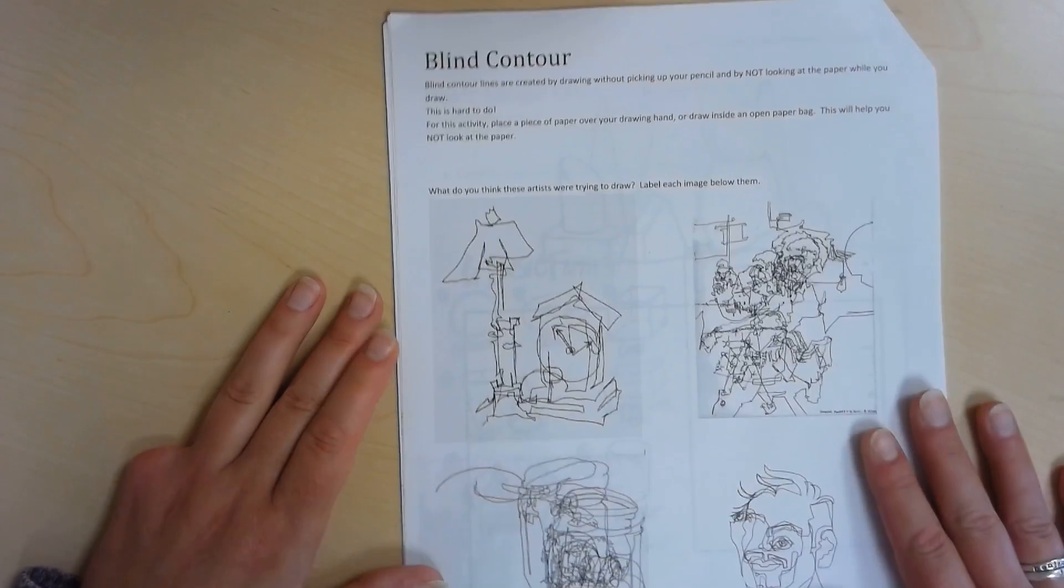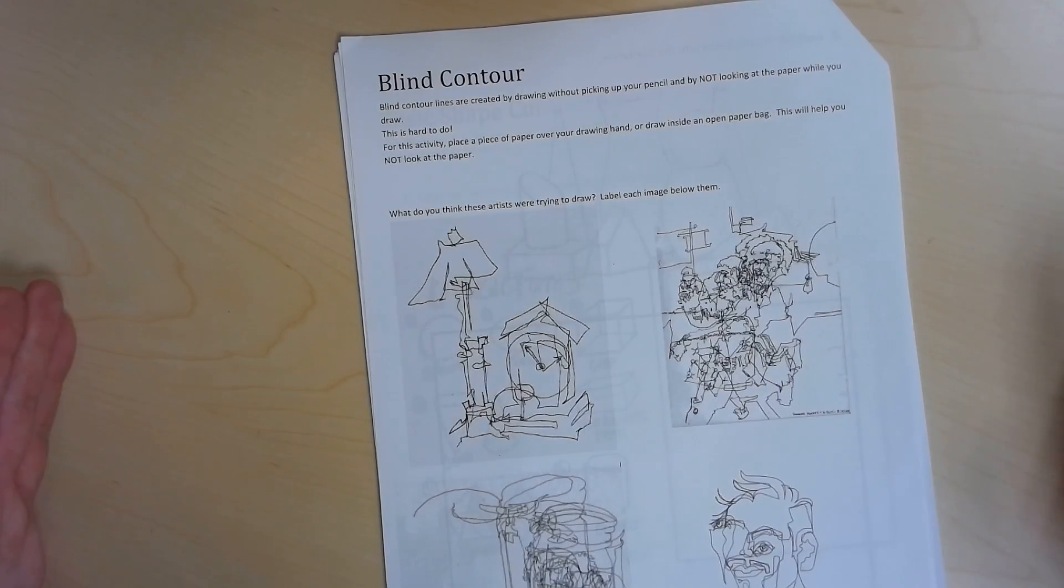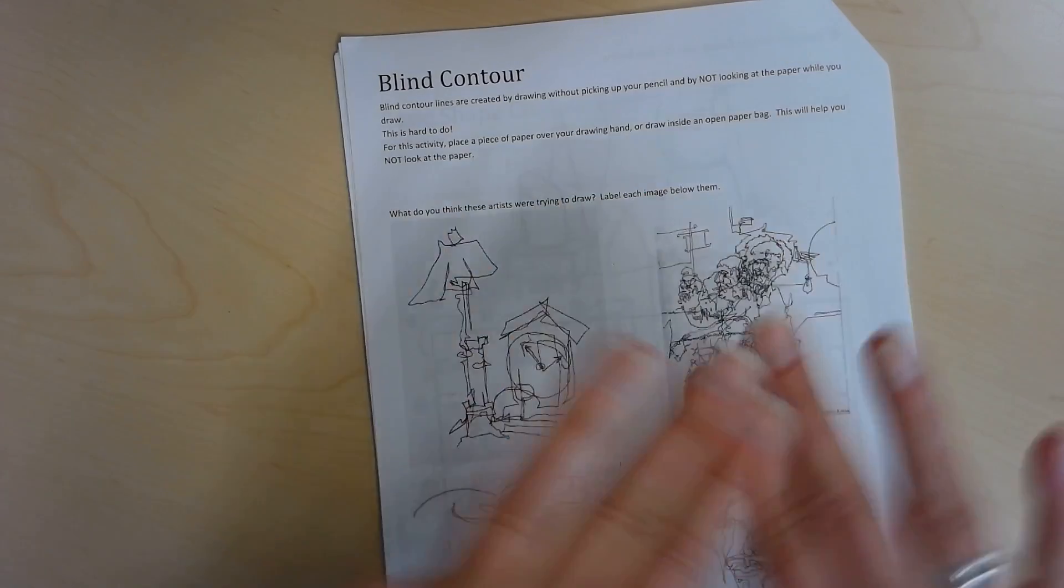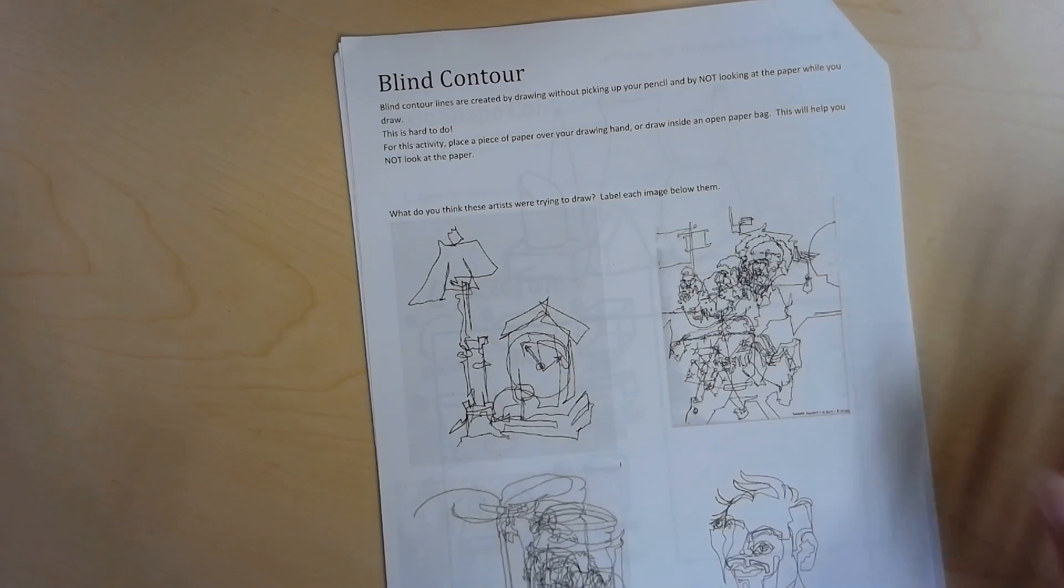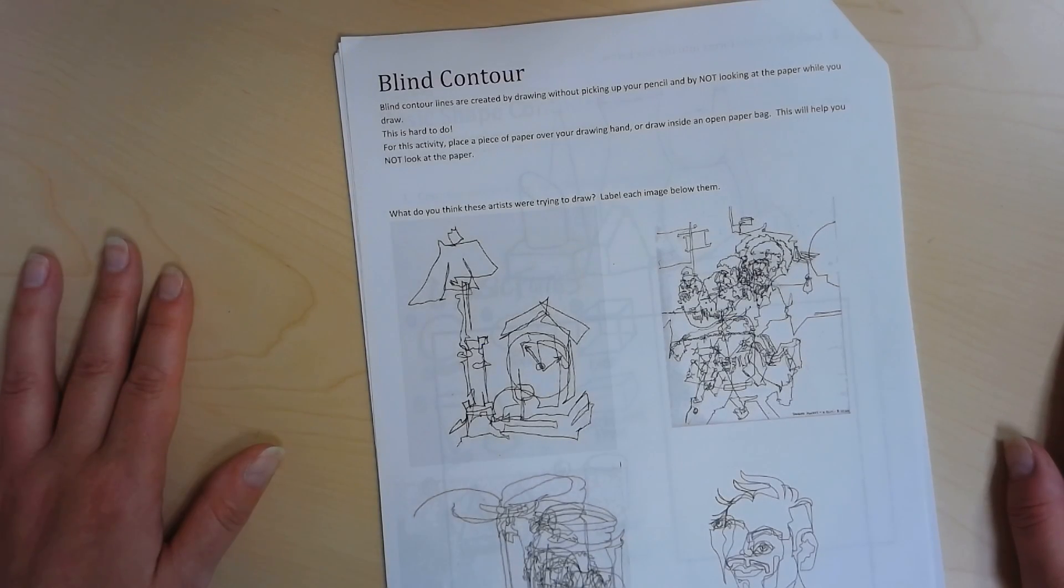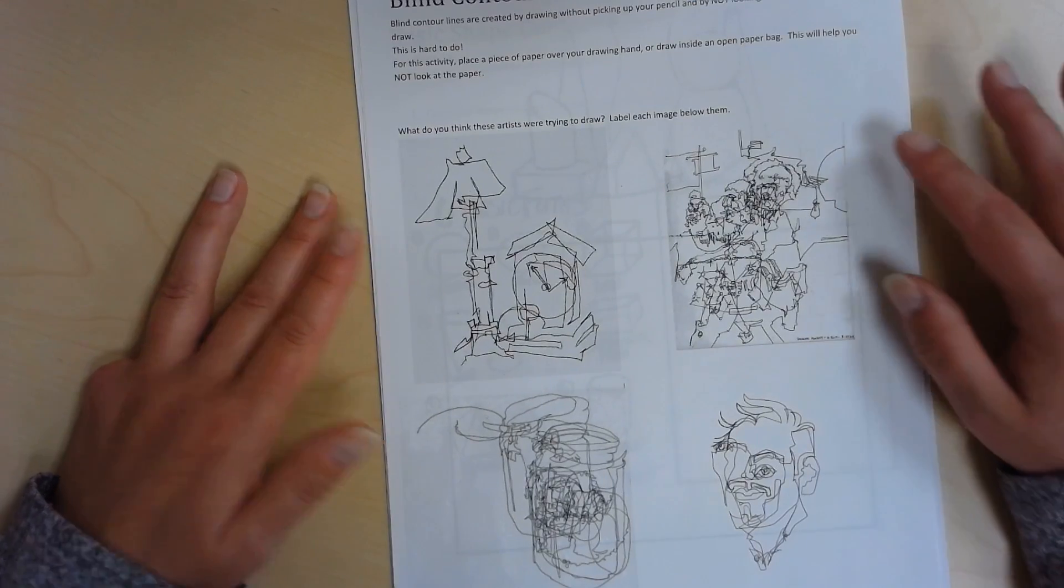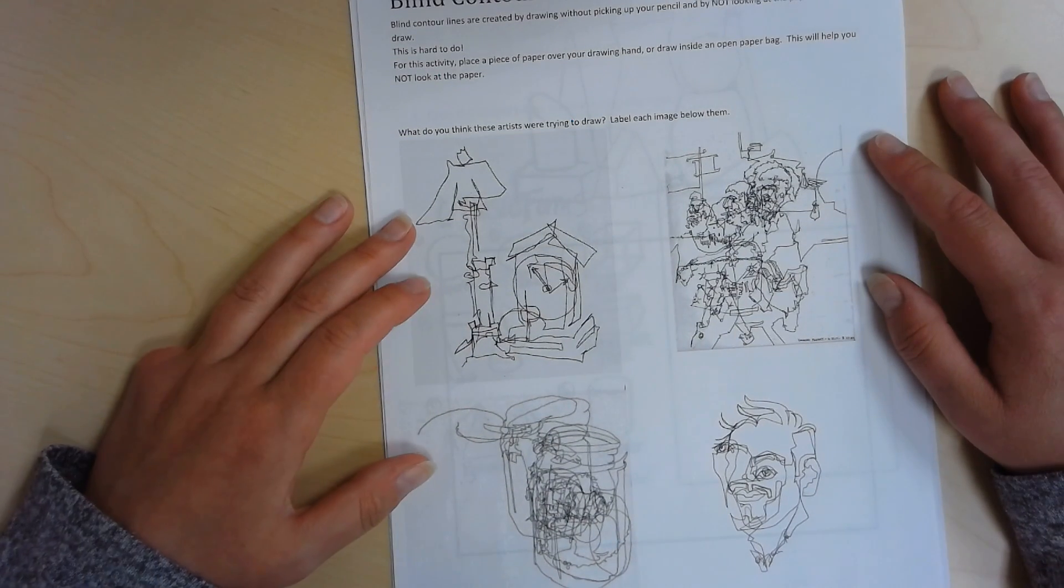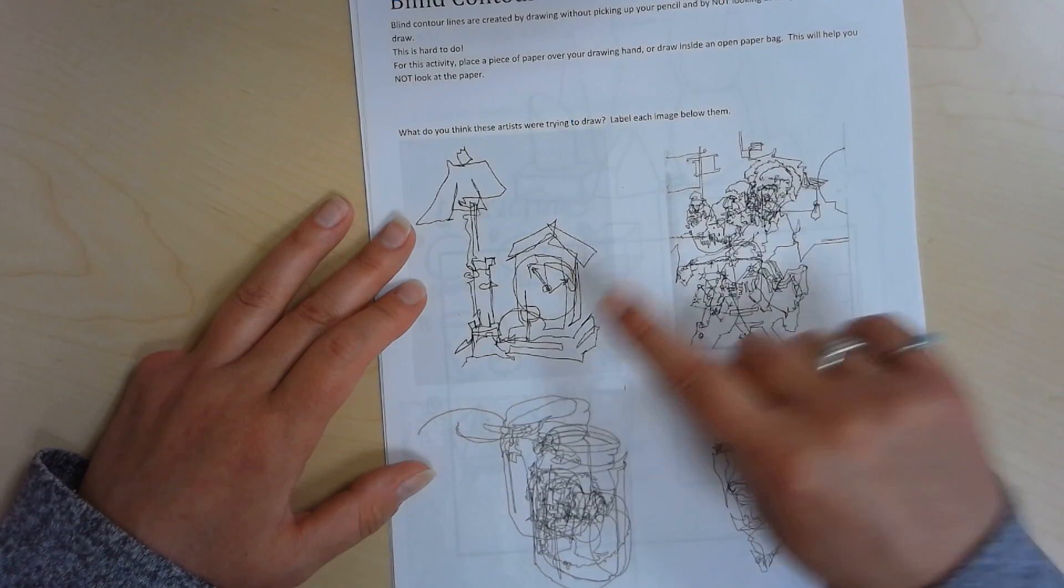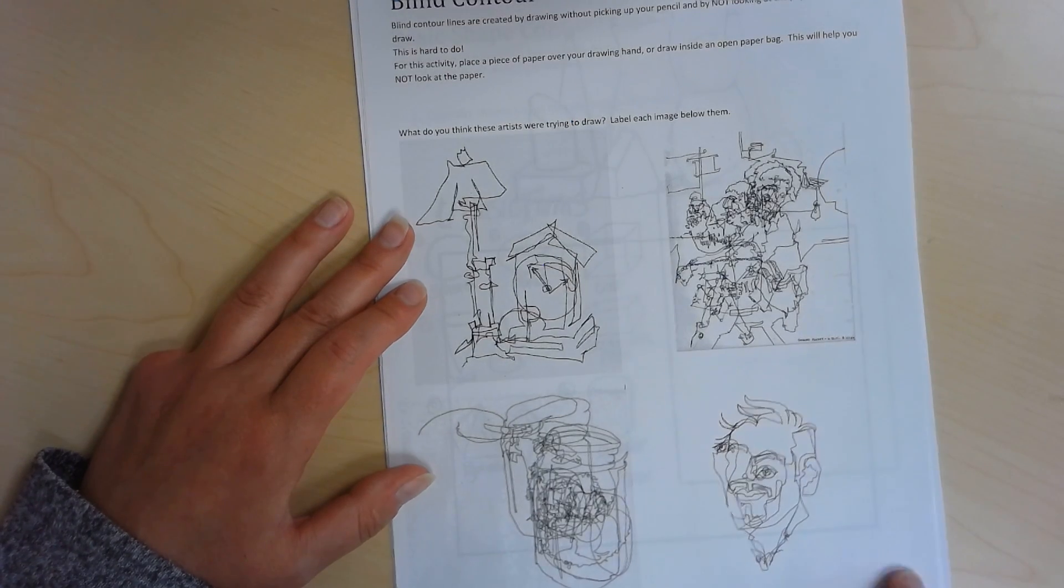You know those forms that we had that covered the keyboards in middle school, the box tops, that would be another good thing to have to do these with. So these artists all created their own, so I'm just interested to see what you think that they are. So look at each one and try to figure out what they were trying to draw and then just label it.